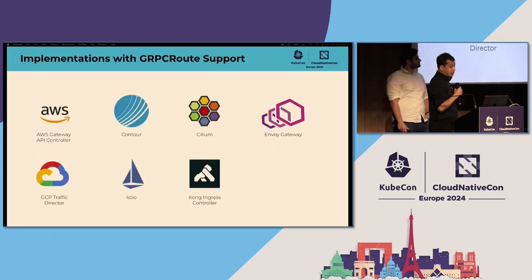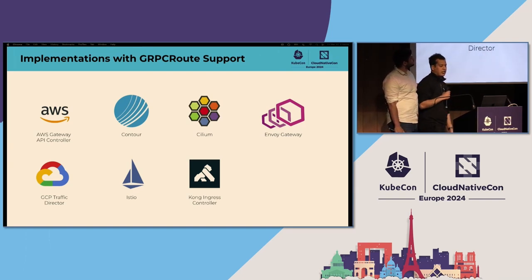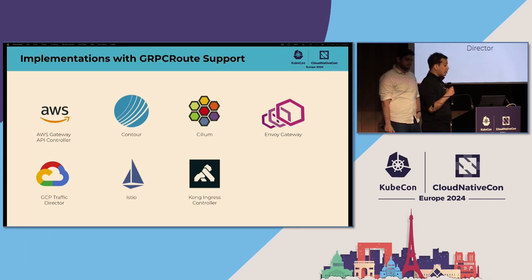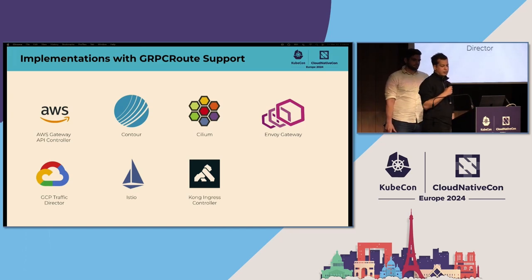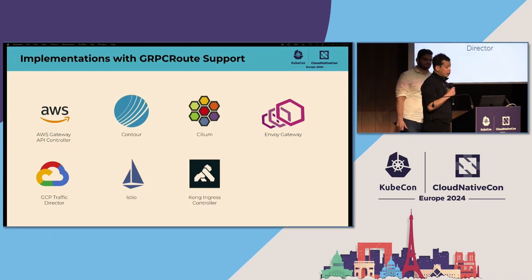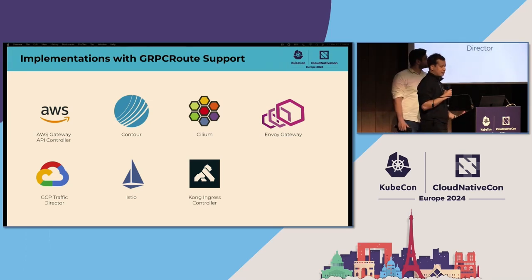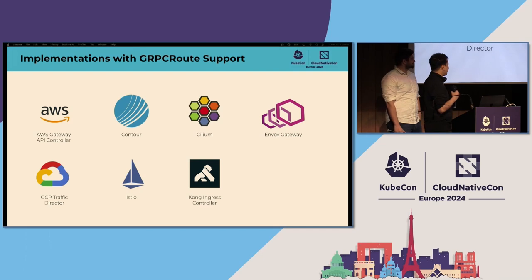It's great to see so many implementations already supporting gRPCRoute today. Conformance tests for gRPCRoute have been recently added, and we're happy to share that they pass on Contour, Cilium, and Envoy Gateway. With multiple implementations passing conformance tests, we've met the last graduation criteria for gRPCRoute. And with gRPCRoute going to v1 soon, we're hoping more implementations add support for it so more users can access it.